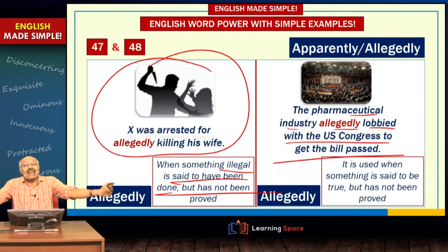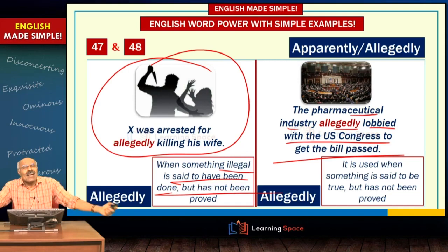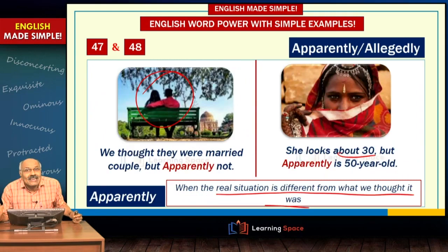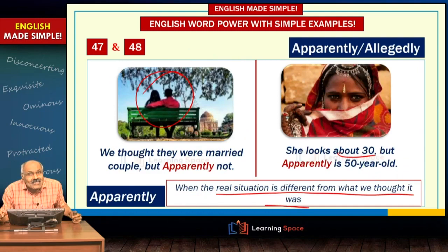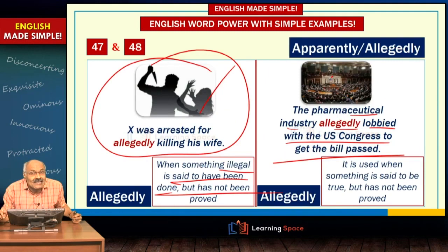Similarly, the pharmaceutical industry allegedly lobbied with the U.S. Congress to get a bill passed — no one has directly witnessed it, but allegedly the pharmaceutical sector convinced members of Congress in the United States. It is said to be true but has not been proved. So 'apparently' and 'allegedly' are different — look at them clearly, as apparently has three to four meanings while allegedly has this specific legal usage.